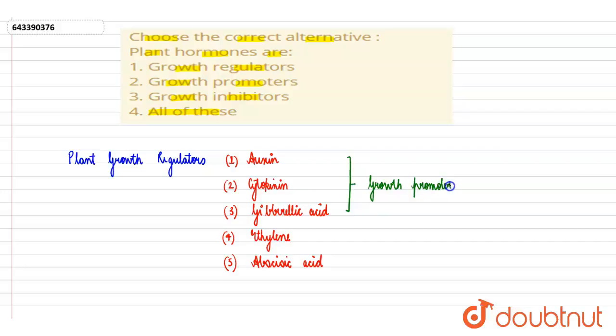And abscisic acid is a growth inhibitor because it inhibits the growth majorly. And if we talk about ethylene, so ethylene acts as both promoter, growth promoter, as well as growth inhibitor.